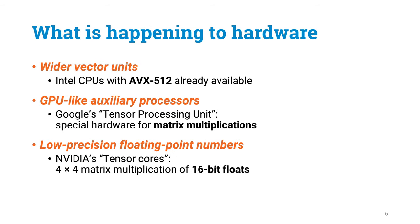Let me conclude by saying a couple of words about the future. How is the hardware going to evolve in the coming years? One thing that we are seeing for sure is wider vector units. You can already buy computers that have got 512-bit vector registers, so now one vector can already hold 16 single precision floating-point numbers.